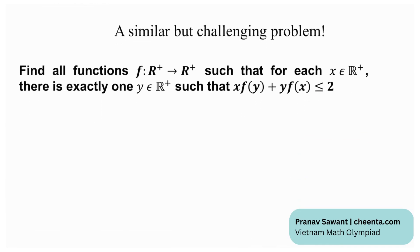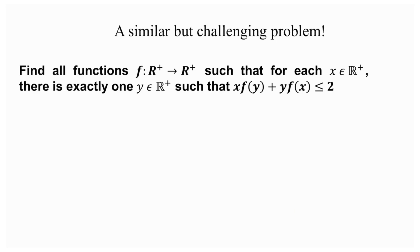At the end, here is a challenging problem — the IMO 2022 Problem 2 I mentioned at the beginning. Find all functions f mapping positive reals to positive reals such that for each x in the positive reals, there is exactly one y such that x·f(y) + y·f(x) ≤ 2. A hint: try employing AM-GM, which may lead to interesting simplifications. Give this at least one and a half to two hours before looking at a solution.